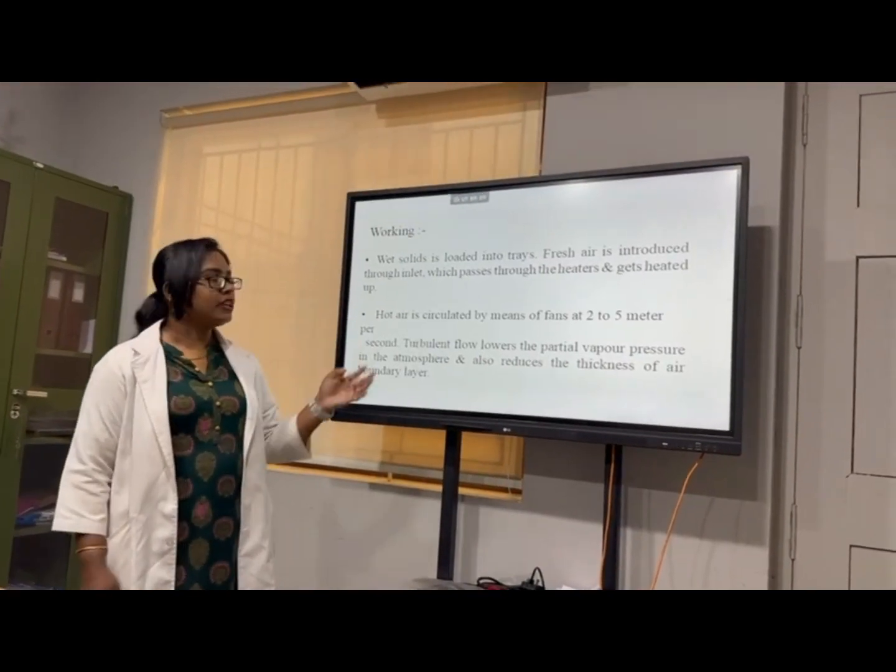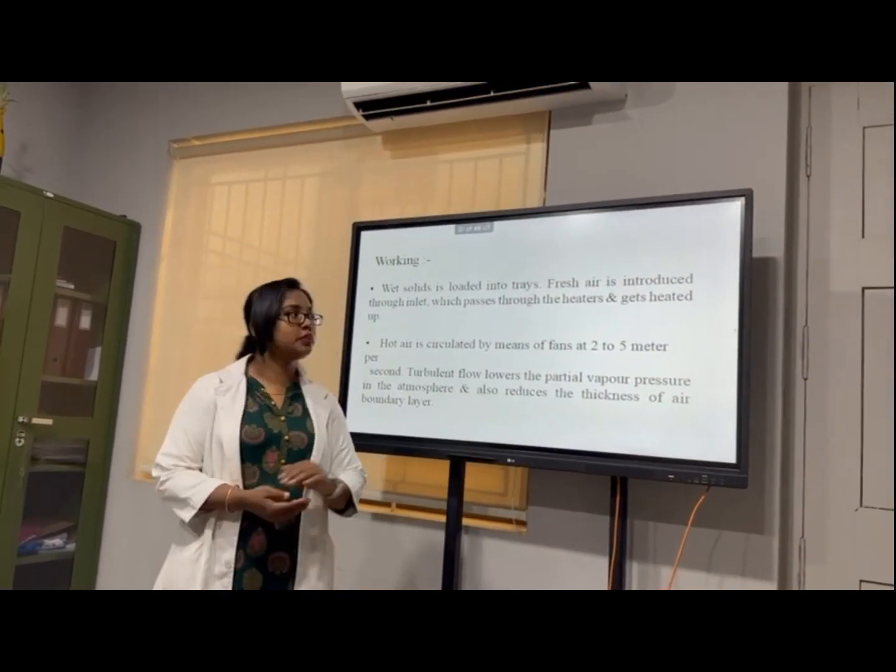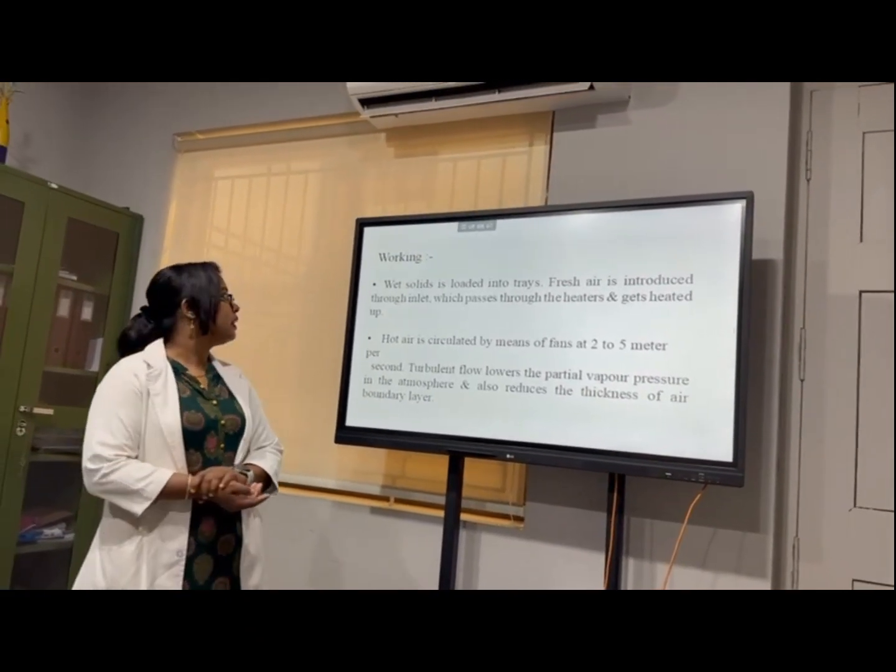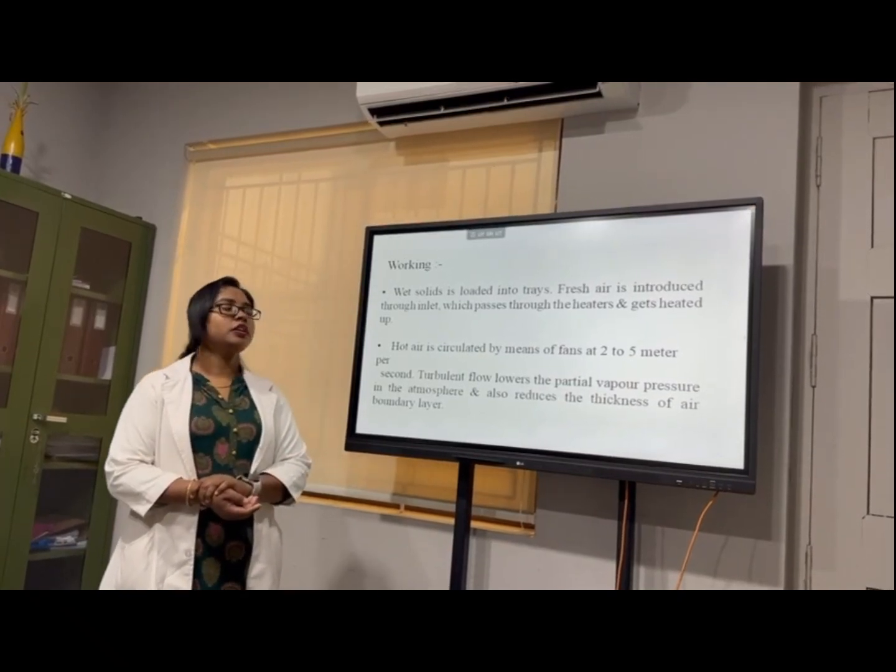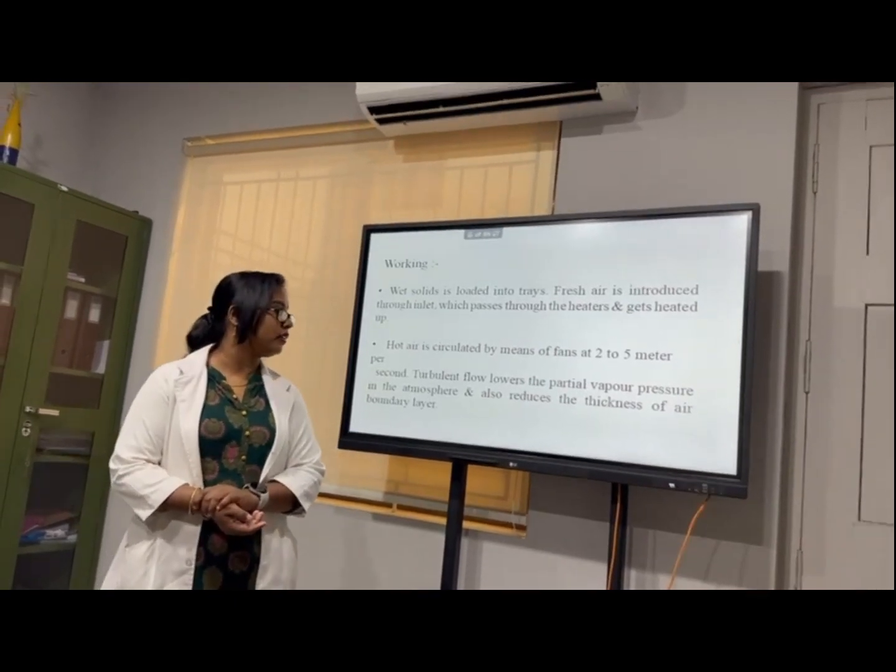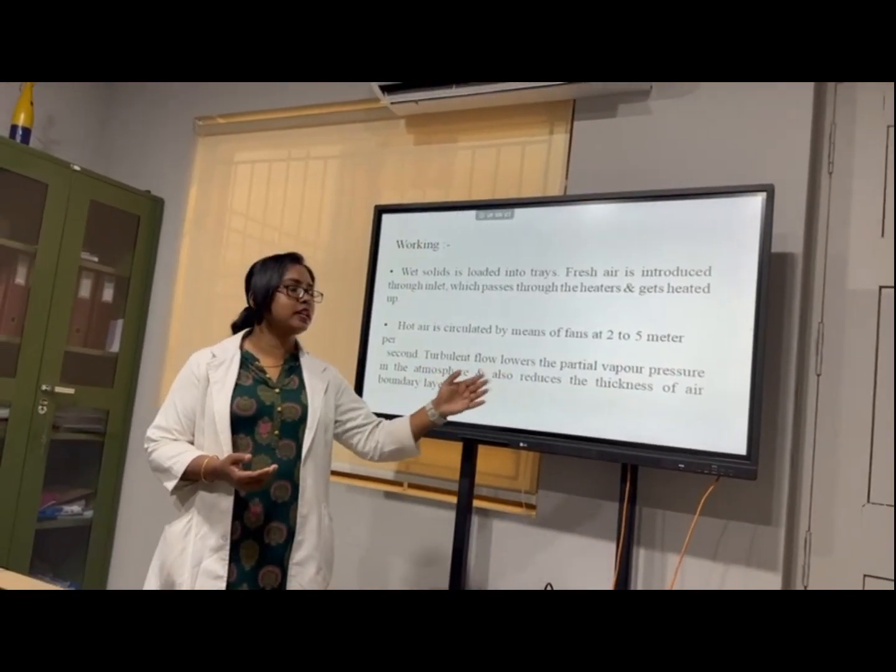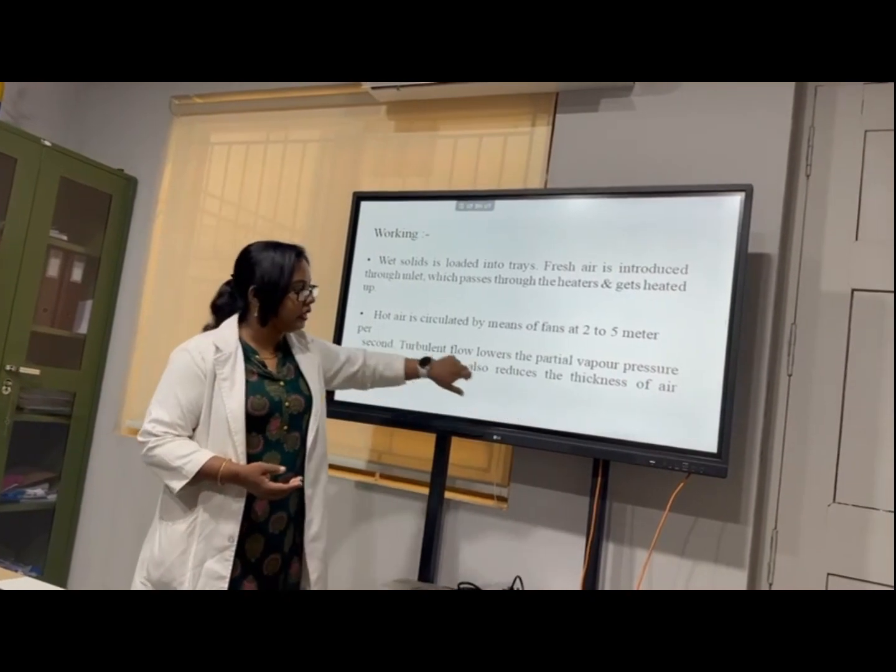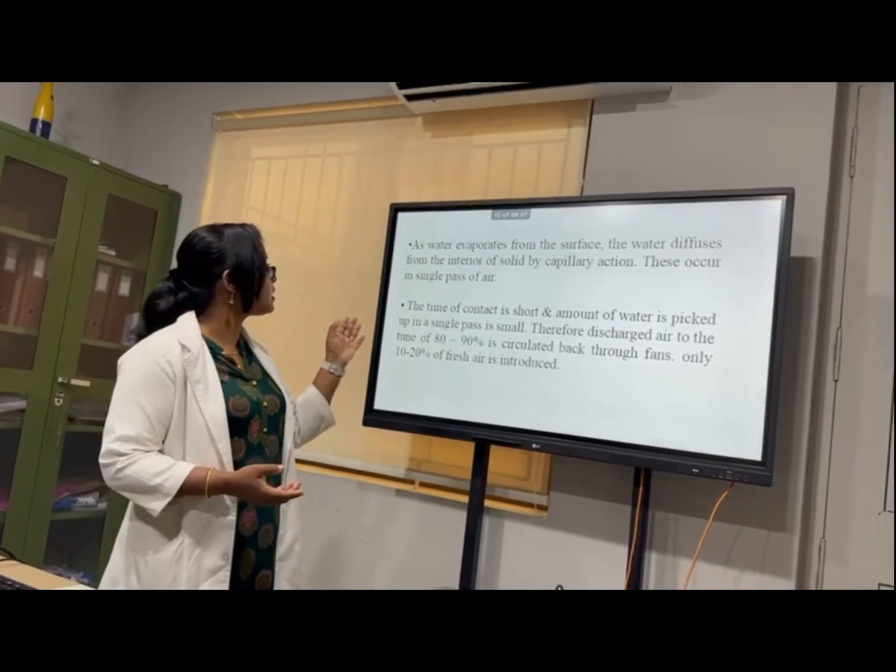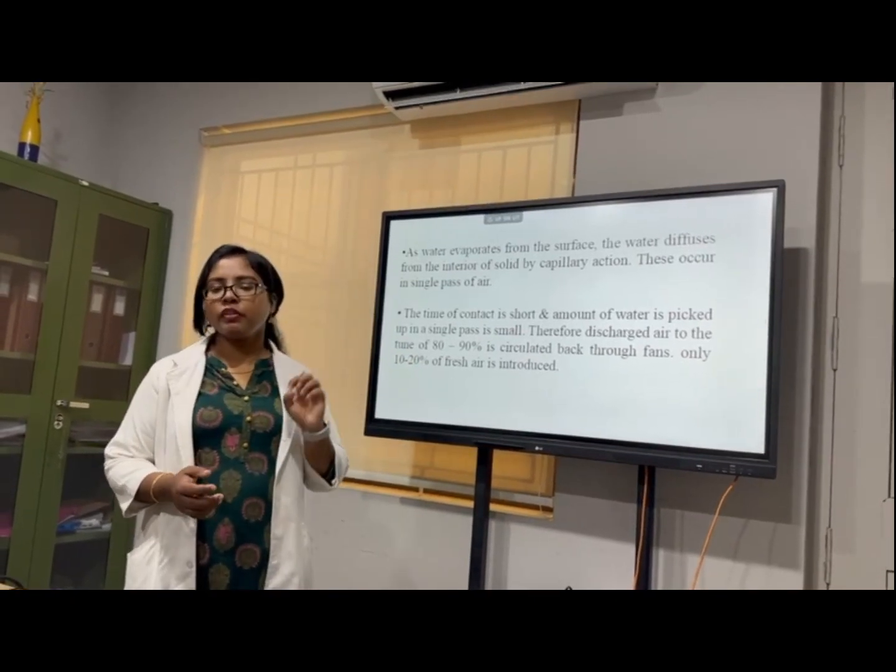In the working, wet solid mass is placed on the trays and the fresh air is introduced to the inlet, passes to the heaters and the gas heater. Then, hot air is circulated by means of 2 to 5 meter per second. Then, turbulent flow of air lowers the vapor pressure of the atmosphere and reduces the thickness of the boundary layer. Then, as the water evaporates from the surface, water diffuses from the interior of the solid by capillary action.